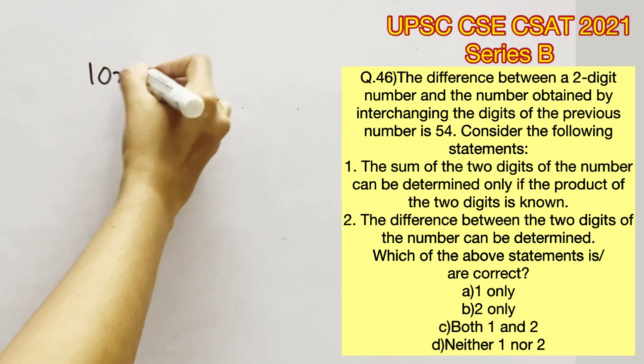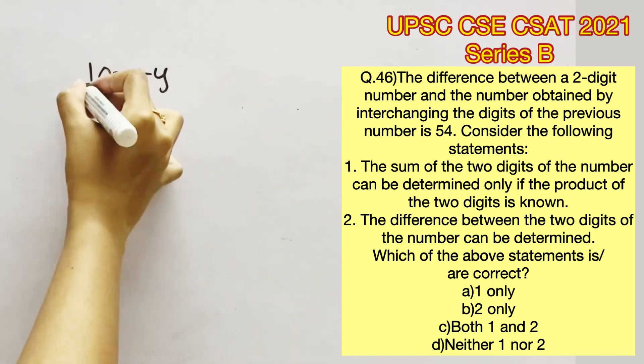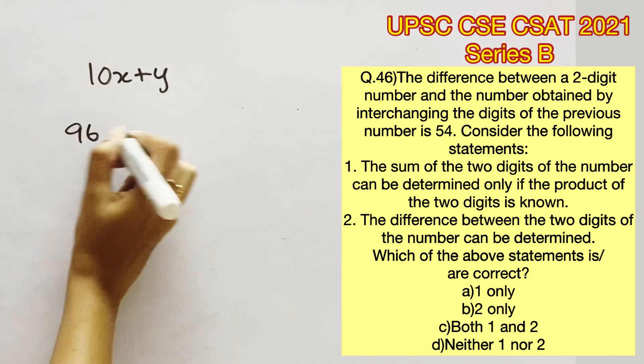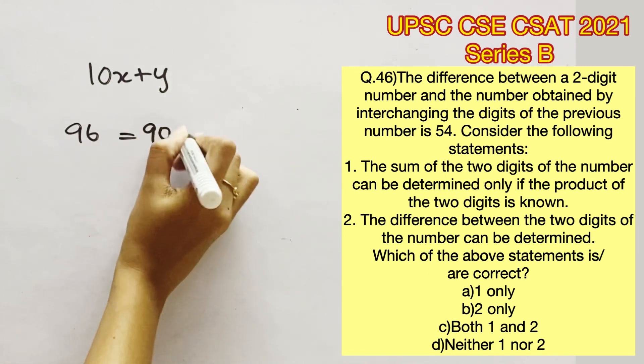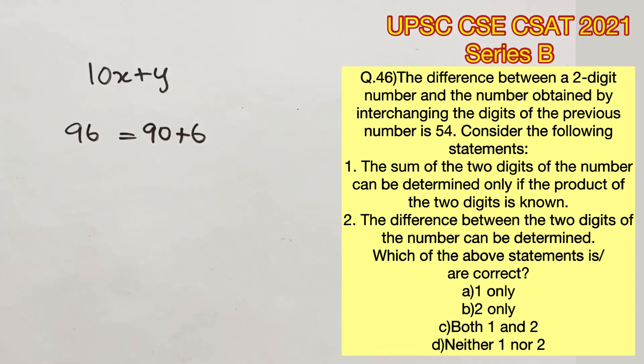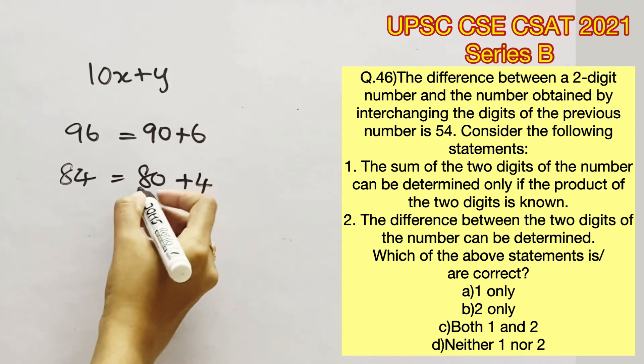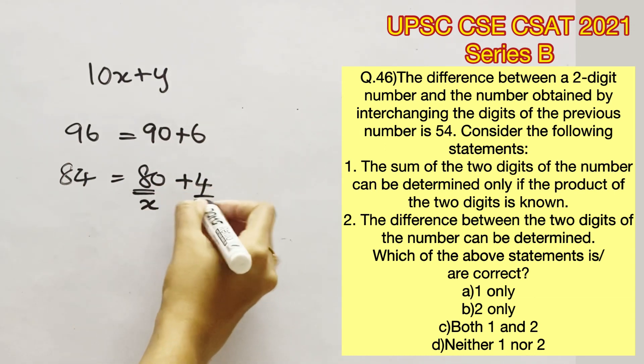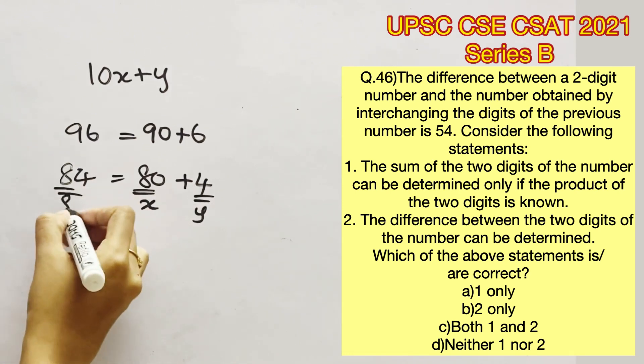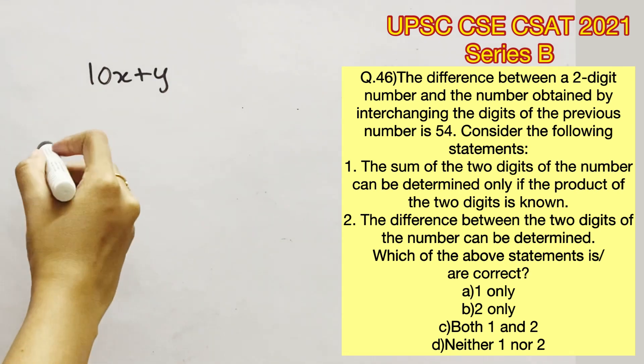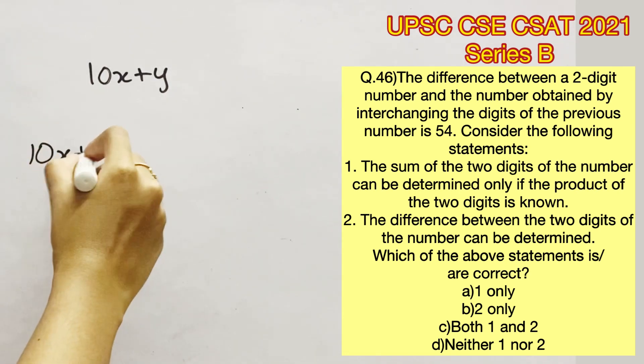We know that a two-digit number can be represented in the form of 10x plus y. For example, consider 96 which can be represented as 90 plus 6, or consider 84 which can be represented as 80 plus 4, where 8 here is x and y is 4. So this means that any two-digit number can be represented in the form of 10x plus y.